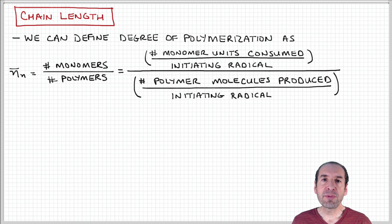I'm going to rearrange this a little bit in terms of quantities that connect better with the kinetic analysis we've already done. The number of monomers in the numerator, I'm going to express as monomer units consumed per initiating radical.